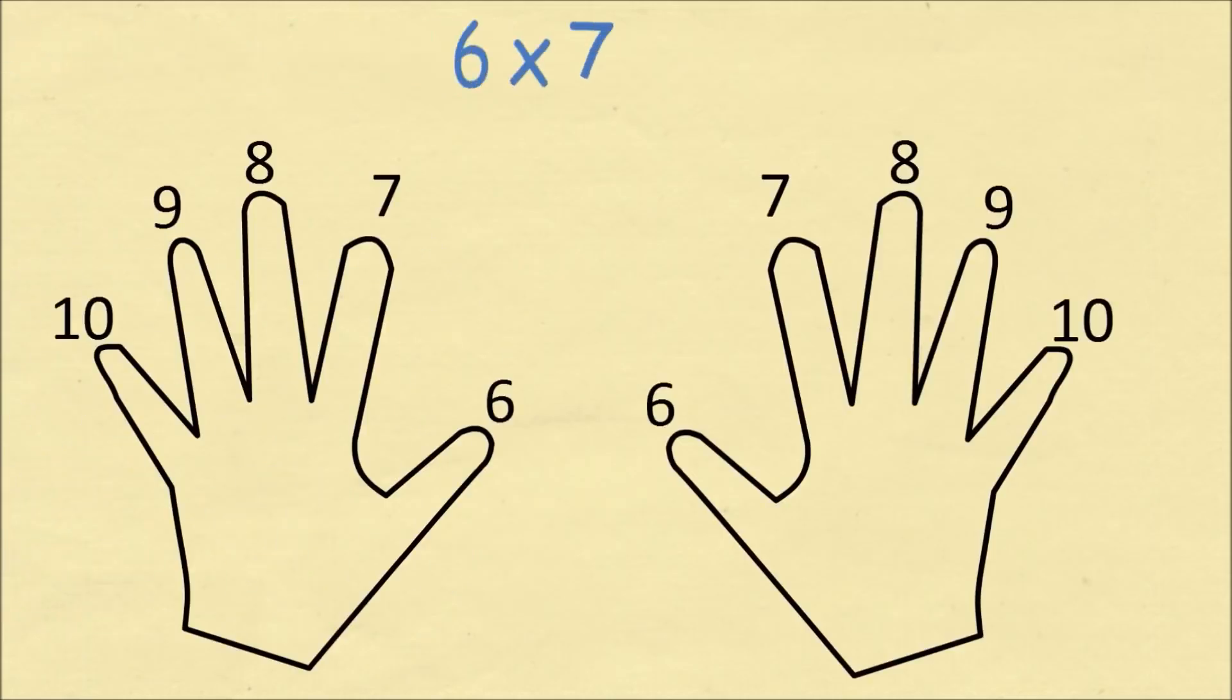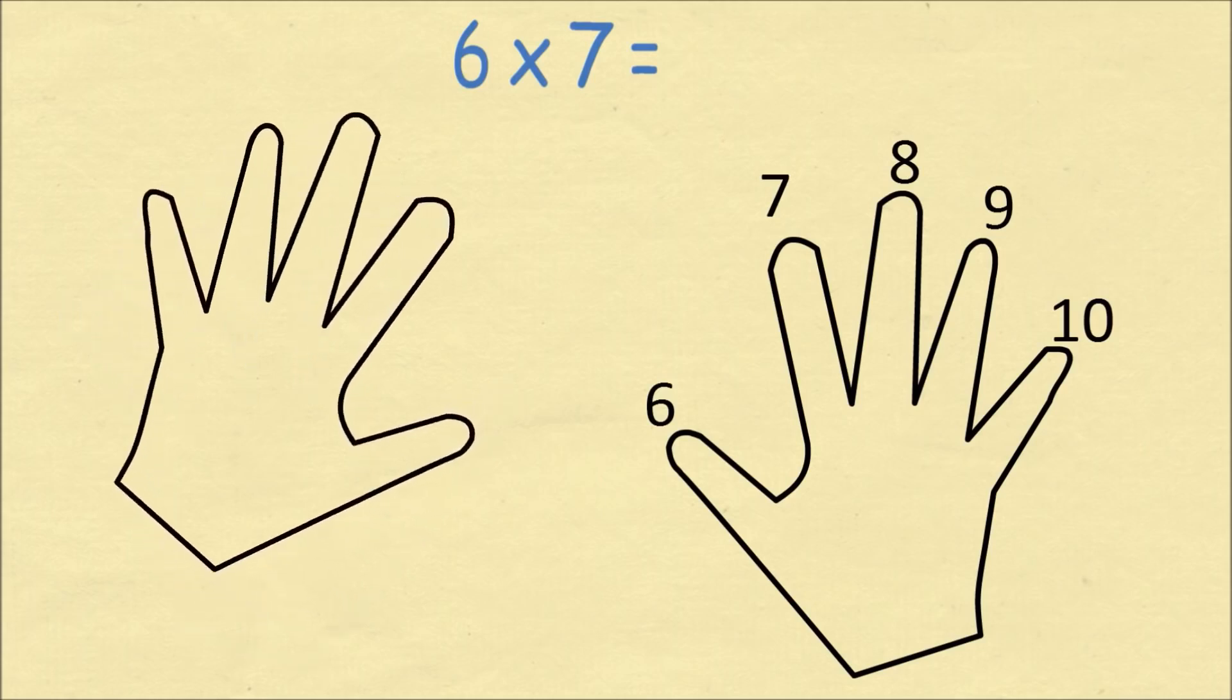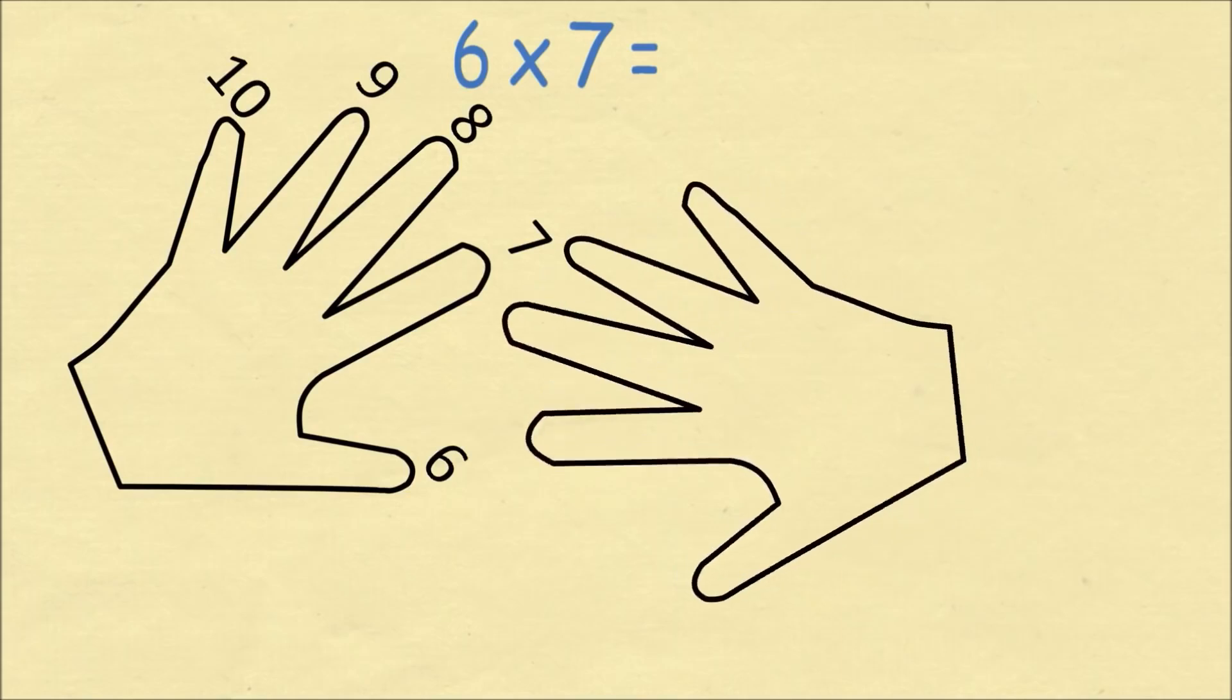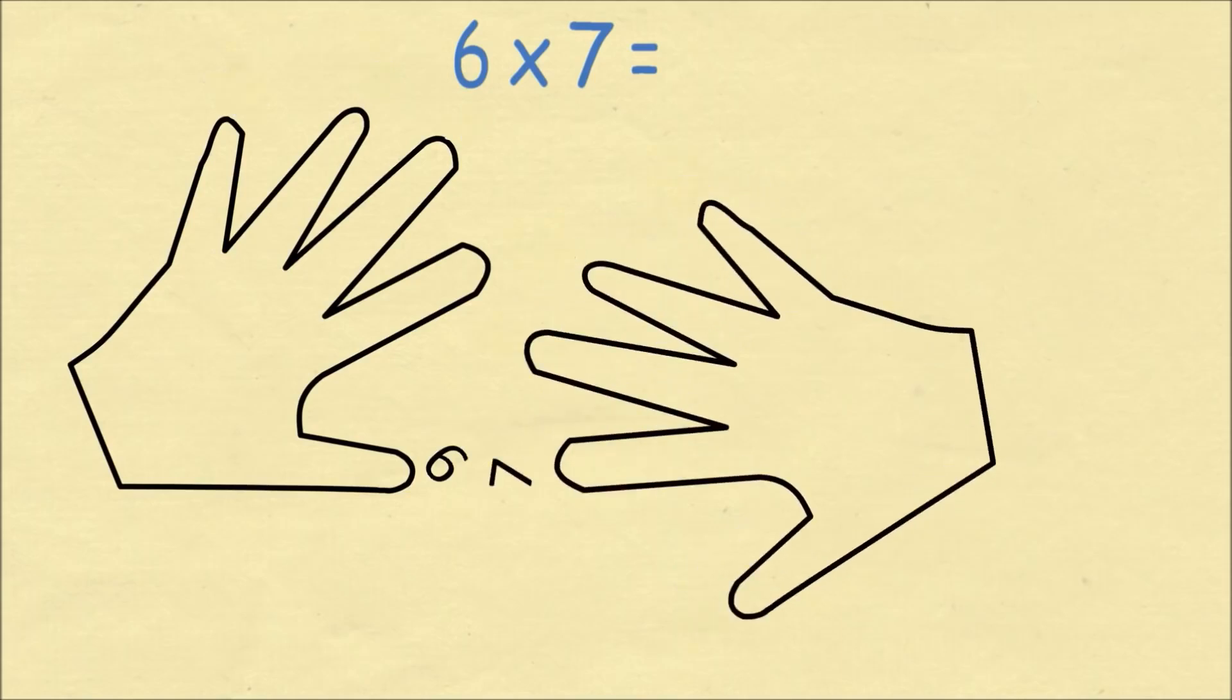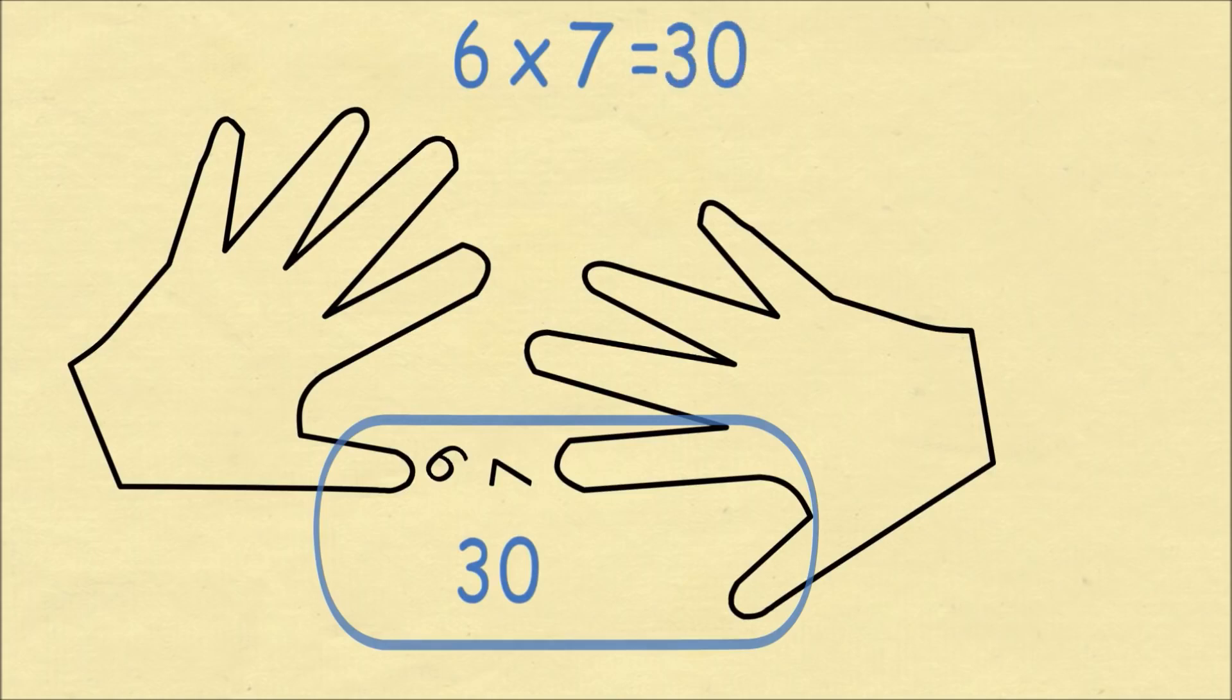This procedure always works for the numbers 6 through 10. Let's do a final example of 6 times 7. We'll rotate our left hand so we have the thumb as the finger 6. We rotate our right hand to the index finger 7. Now we count the number of fingers that are below the two fingers which are touching, including those two fingers. We have one on the left hand and two on the right hand, which makes for 3 or 30. Now we count the fingers which are above the fingers which are touching. On the left hand we have 4 and on the right hand we have 3. We multiply these. 4 times 3 is 12. So we add 30 and 12 to get 42. And in fact, 6 times 7 is 42. So it's a pretty neat trick.